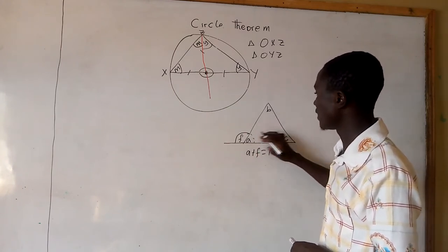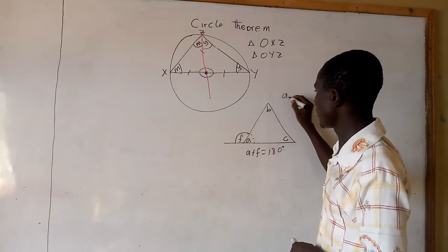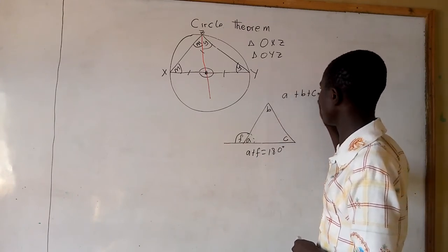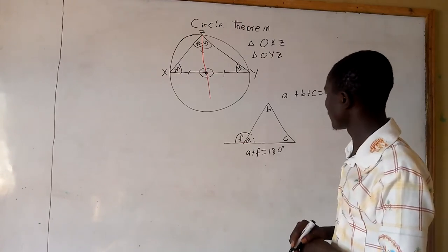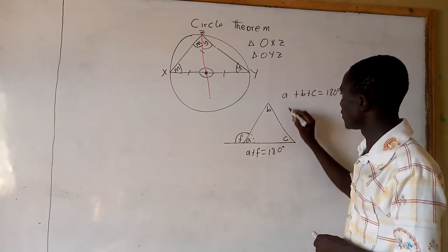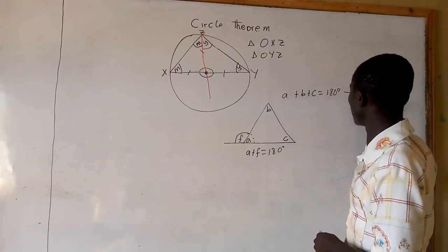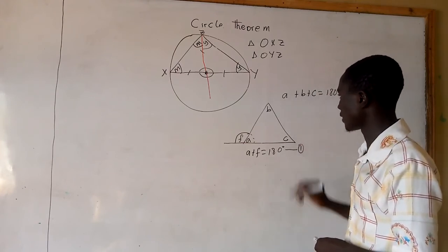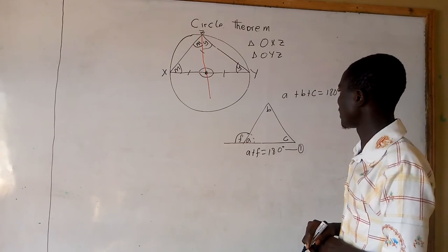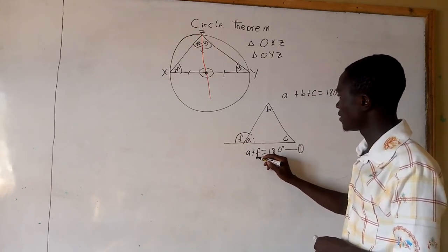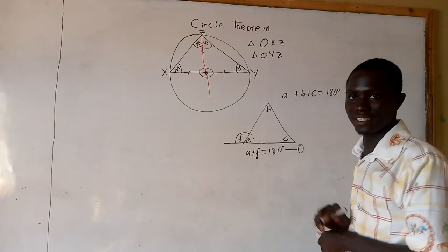Now, let us find the sum of the interior angles. A plus B plus C equals 180 degrees. So now, if we compare equation 2 with equation 1, you will see that F is equal to B plus C.